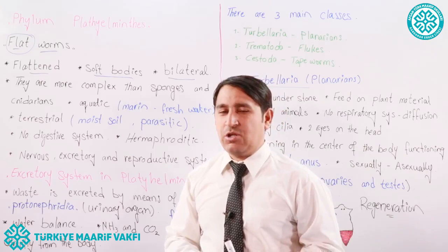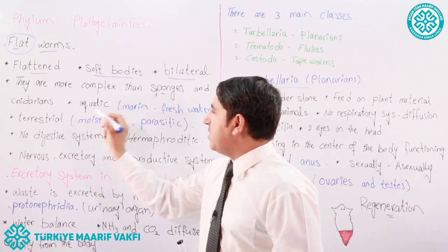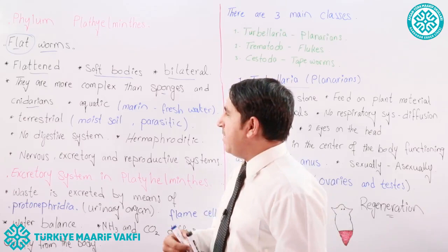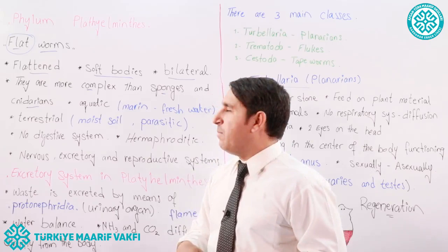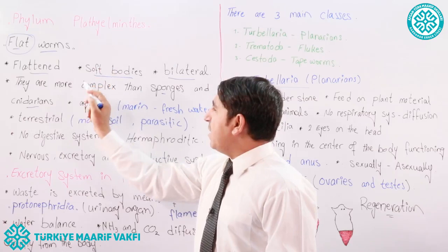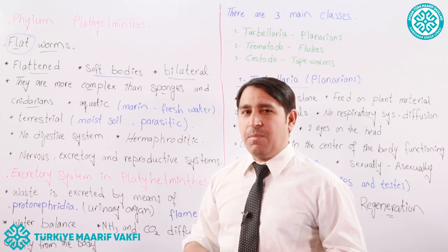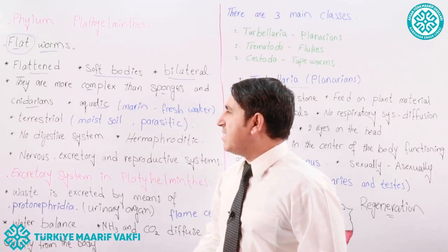Bilateral symmetry is seen in Platyhelminthes. They are more complex than sponges and cnidarians. These are the phylums of Kingdom Animalia which we have studied in previous lessons. Sponges and cnidarians are simple animals — they don't have complex body structures. But Platyhelminthes are more complex because they have some systems in their body.